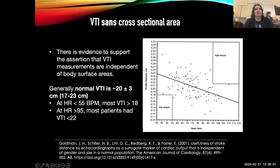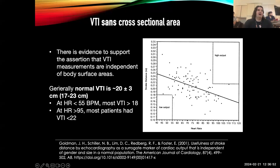VTI alone is actually helpful, even without cross-sectional area. A study done in 2001 showed that across body surface areas, a normal VTI is around 20 plus or minus 3 centimeters. At heart rates less than 55, that's the normal VTI. Most patients had a VTI greater than 18, and at heart rates greater than 95, most patients had a VTI less than 22. So if your VTI is 28 and your heart rate is 110, you're probably in a high output state — typically you see a drop in stroke volume when heart rate goes up, and a rise in stroke volume as heart rate drops. There are also studies in CICU and CCU patients showing that a depressed VTI is actually a better predictor of morbidity and mortality than ejection fraction.